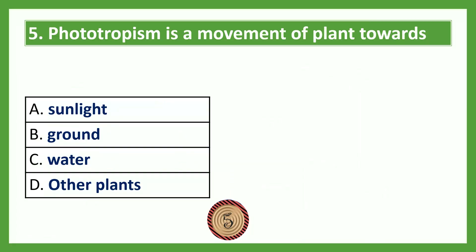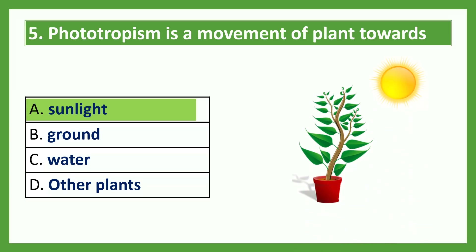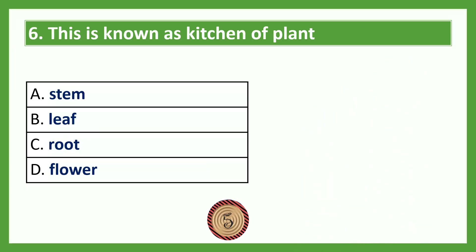Phototropism is a movement of plants towards — Option A: sunlight; Option B: ground; Option C: water; Option D: other plants. The answer is Option A, sunlight. This is known as the kitchen of the plant — Option A: stem; Option B: leaf; Option C: root; Option D: flower.